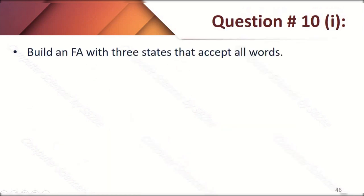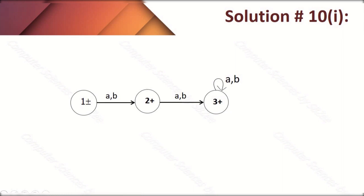Question ten, part two: build an FA with exactly three states that accepts all words. The answer is similar to what was learned in the finite automata example lecture but using only three states. From state 1 it accepts lambda (empty string). From state 2 it accepts single 'a' or single 'b'. At state 3 it accepts length-2 words: 'AA', 'BB', 'BA', 'AB'. From state 3, with a self-loop, it can accept any word of any length. Question eleven: build an FA that accepts only words with an even total number of letters — this is equivalent to even-length words, which was covered in the finite automata lecture, so the FA is the same.